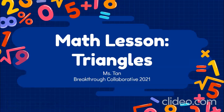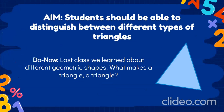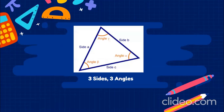Class, today we will be learning about the different kinds of triangles. Last class we learned about different geometric shapes. Can anyone tell me what makes a triangle a triangle? Jessica? A triangle has three sides and three angles. Exactly, so every triangle has three sides and three angles.